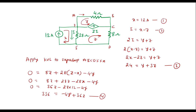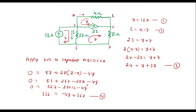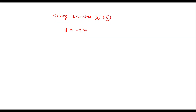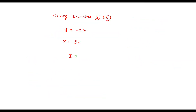Solving equations 3 and 4 simultaneously gives y equals minus 3 amps and z equals 9 amps. The current through the 28 ohm resistor is i equals x minus z equals 12 minus 9, so i equals 3 amps. Therefore, the current through the 28 ohm resistor is 3 amps.